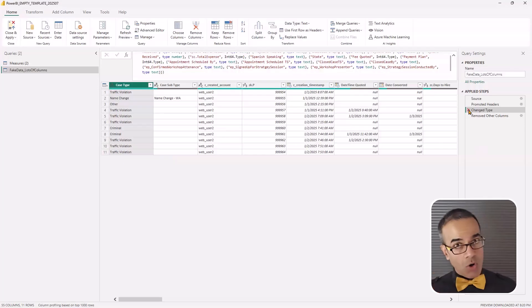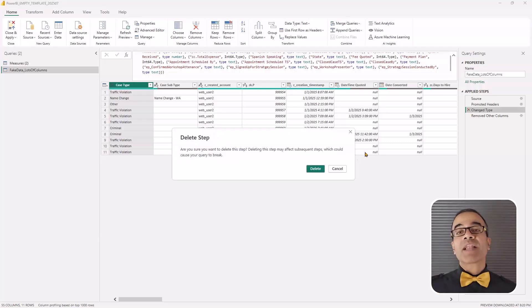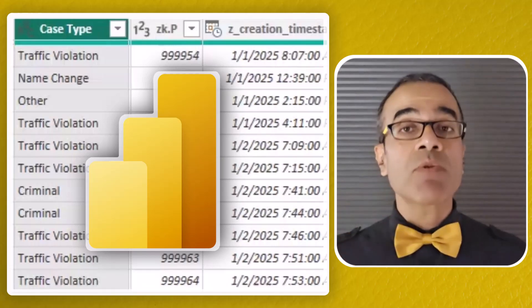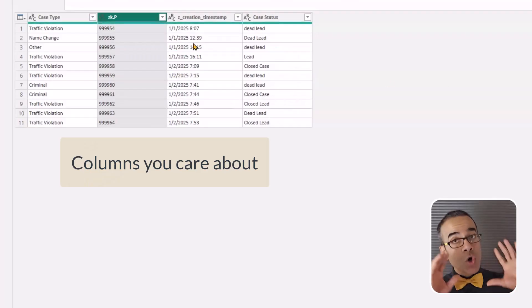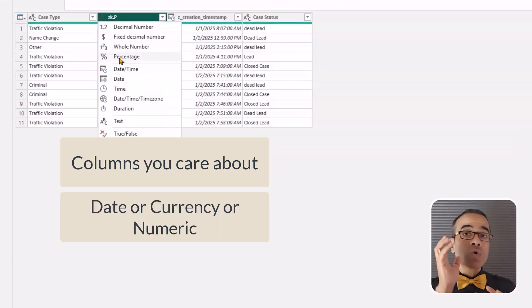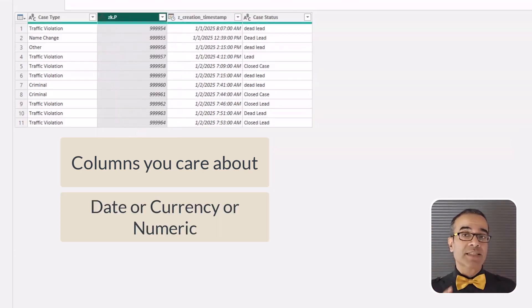So what do you do? Simple. Always, always delete that automatic change type step and only add back the change type for, number one, the columns you care about, and number two, filter those to only the ones that are not text. That is typically date or some kind of a number. It keeps the hard coding of the column name to a minimum.